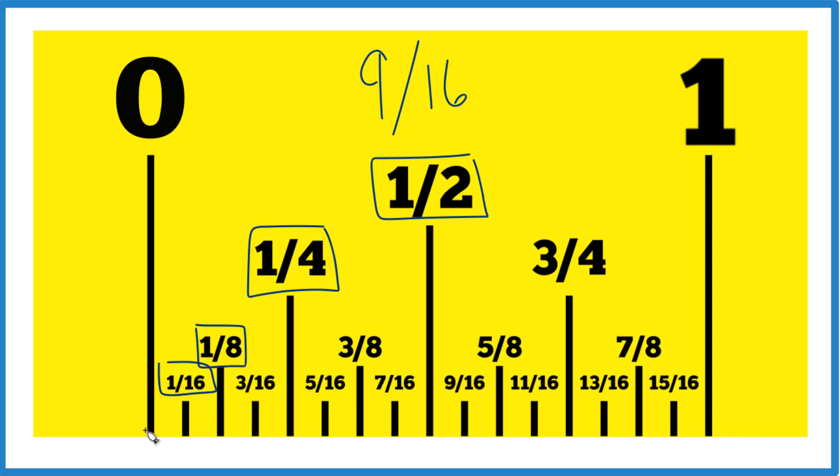So we want 9 sixteenths. So 1, 2, 3, there's 3 sixteenths, 4, 5, 6, 7 sixteenths, 8 sixteenths. 8 divided by 16 is just 1 half. And there is 9 sixteenths. That's what we're looking for.